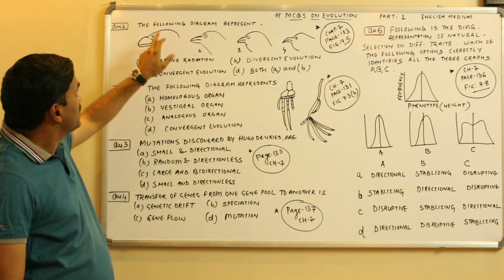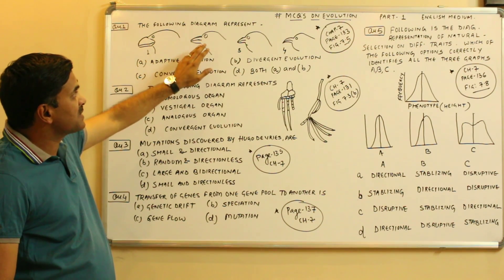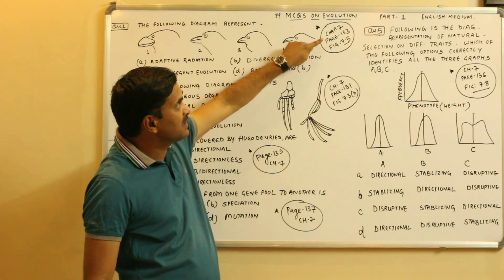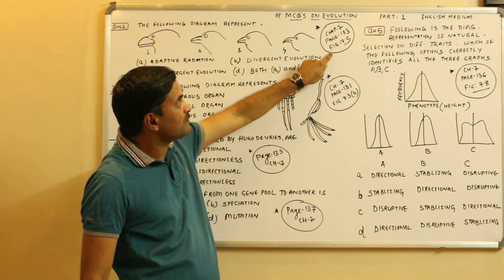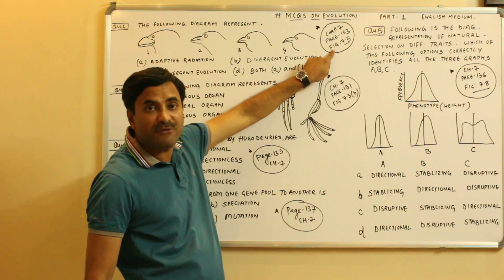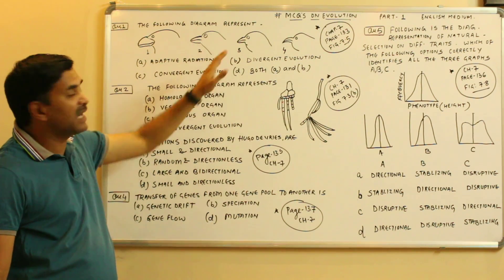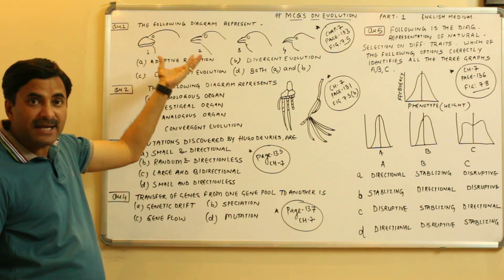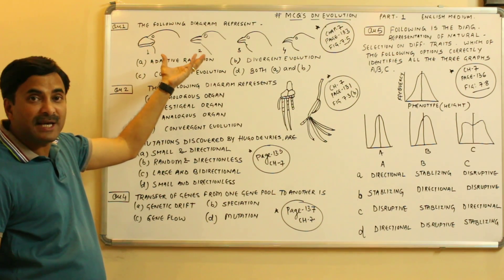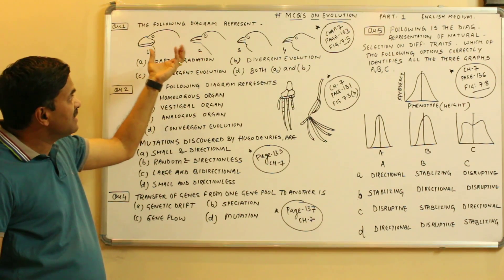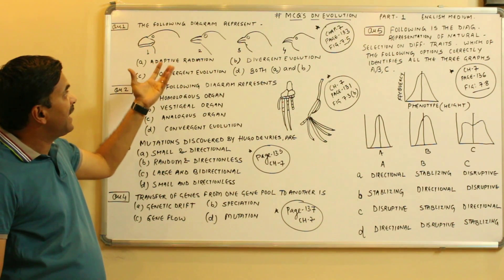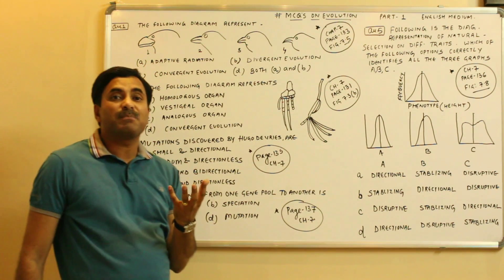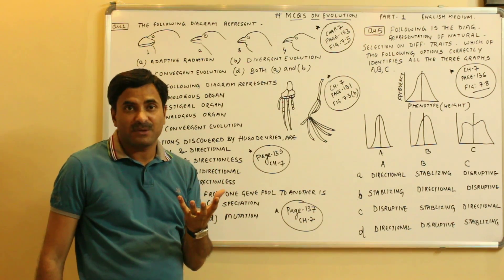The very first question: the following diagram represents — as seen in chapter 7, class 12, page number 133, figure 7.5 — diagrams representing black colored birds found on the Galapagos Island. These are the Darwin Finches, and this diagram of the Darwin Finches is the best example to show adaptive radiation.